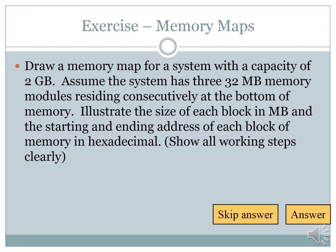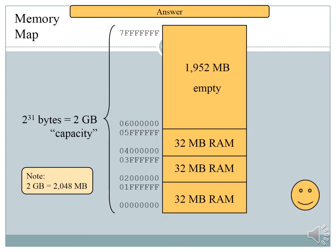Exercise: Draw a memory map for a system with a capacity of 2 gigabytes. Assume the system has three 32-megabyte memory modules residing consecutively at the bottom of memory. List the size of each block in megabytes, and the starting and ending address of each block of memory in hexadecimal. First, since you are given both megabytes and gigabytes, convert gigabytes to megabytes: 1 gigabyte = 2¹⁰ megabytes.